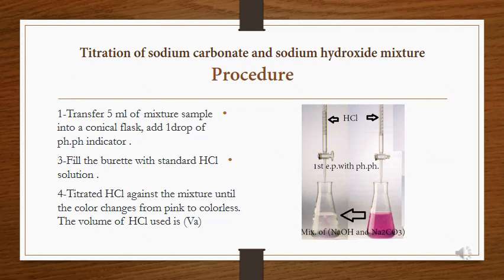We have a mixture of NaOH and Na2CO3 in the conical flask. Add one drop of phenolphthalein indicator — its pH range corresponds to the first endpoint at around pH 8. The HCl is then added from the burette, and we note the volume at the first endpoint (VA).